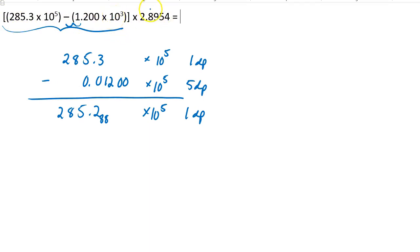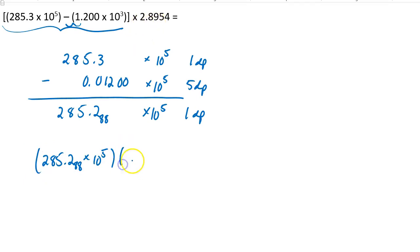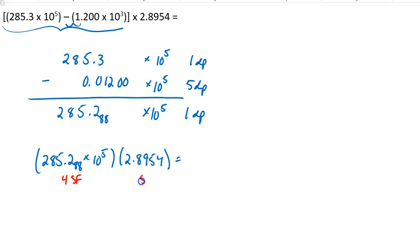I still need to multiply by this number. So 285.2 — 1 decimal place with an insignificant 8 — times 10 to the 5th. And now I'm going to multiply by 2.8954. My rule for sig figs is different now: I don't care about decimal places anymore, I care about sig figs. I've got 4 sig figs here and 5 sig figs here. My answer better only have 4 sig figs.